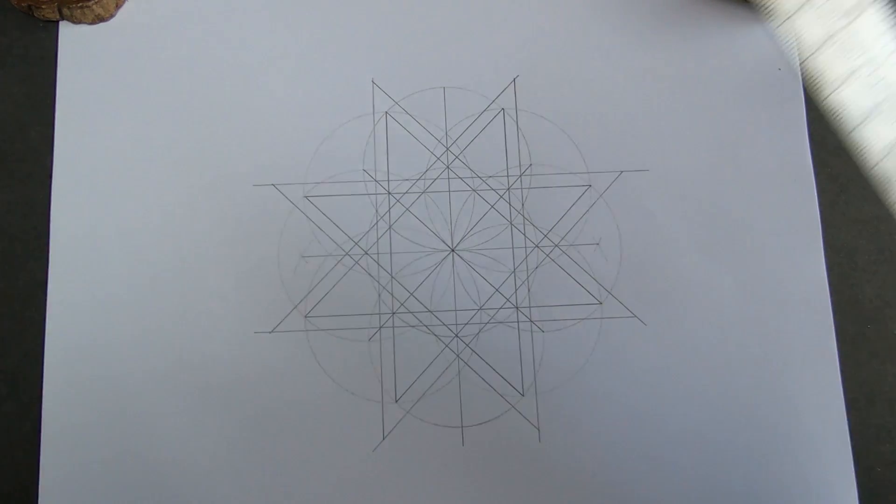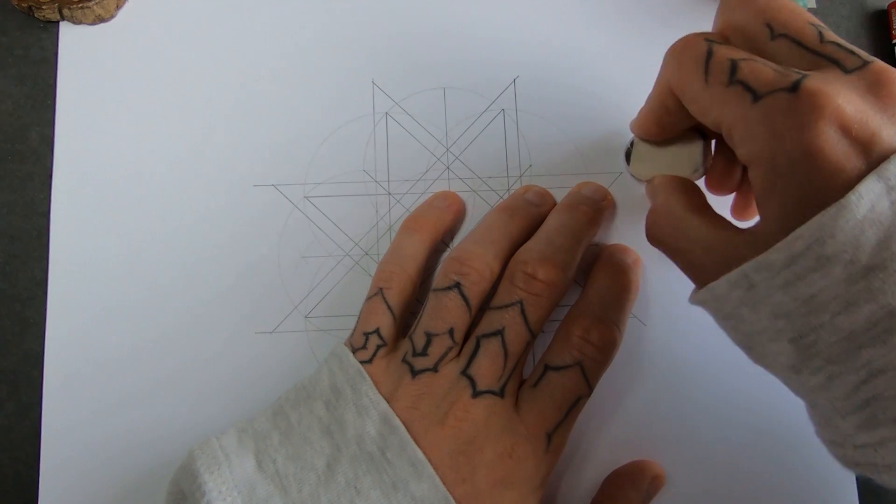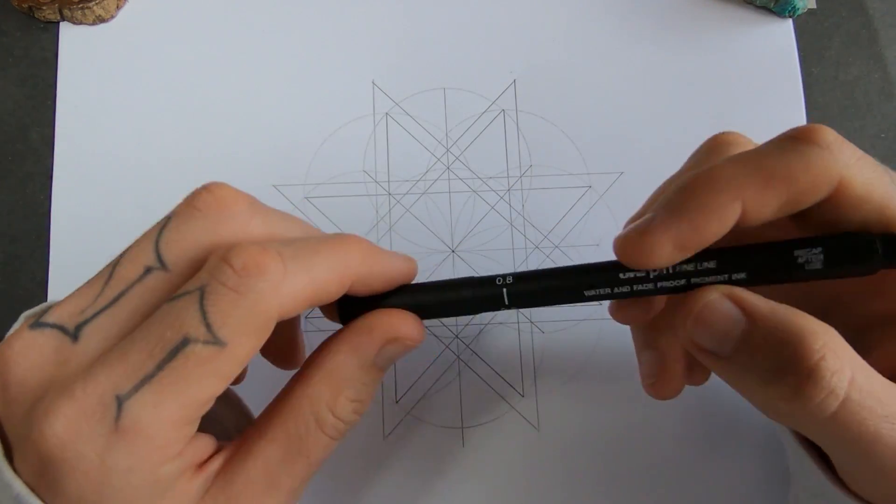There we go. We've got this knotted octagram going on now. Just going to rub out a few lines here and there to tidy it up a bit. Alright then, let's get the pen out.